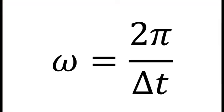We can also go ahead and find the crank speed omega and RPM using this equation: Omega equals 2 pi over delta T.